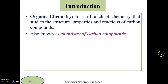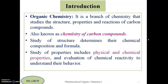So, what is organic chemistry first? It is a discipline or branch of chemistry that studies the structure, properties, and reactions of carbon compounds. We can also define organic chemistry as simply the chemistry of carbon compounds, because many organic compounds majorly consist of carbon as one of the elements.